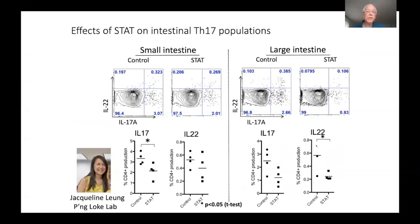We were also interested in the effects of these subtherapeutic antibiotics on intestinal lymphocyte populations — specifically TH17 populations. This work was done in Peng Lok's lab by Jackie Leung. Looking at the small intestine and large intestine by flow cytometry, markers of TH17 cells are down in all populations — a very consistent finding.